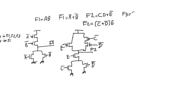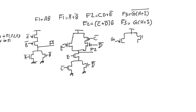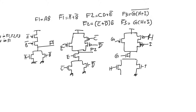f3 is equal to g times (h plus i), all bar, so f3-bar is g times (h plus i). This is the exact same architecture as gate f2, just with different logic inputs but the same connections. We have g times (h plus i) in both the pull-up and pull-down networks, giving us the output f3.